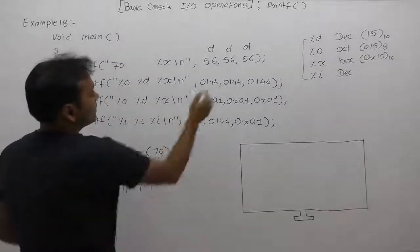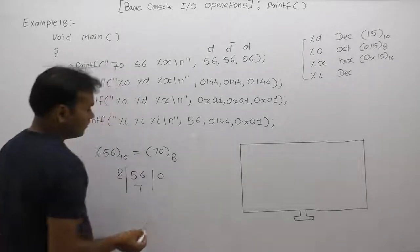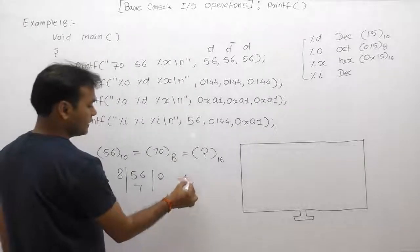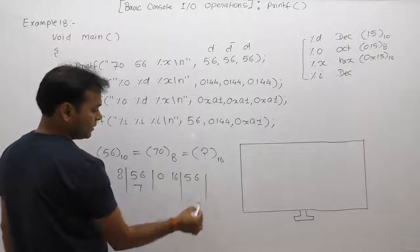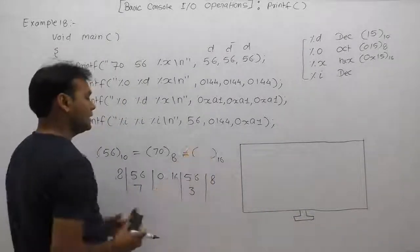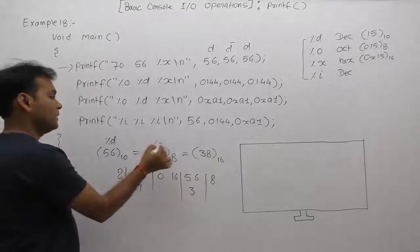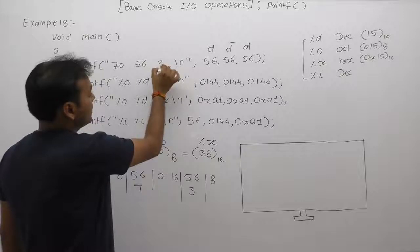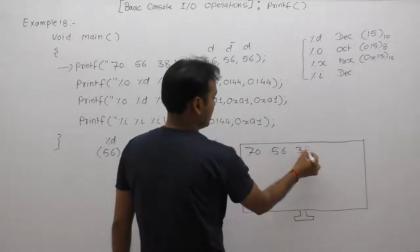So %o is replaced by 70. For %d there is no conversion needed — 56 is directly replaced. For %x, we find the hexadecimal equivalent by dividing 56 by base 16. After dividing, the remainder is 8 and the equivalent hexadecimal value is 38. Therefore the final output displays 70, 56, 38.